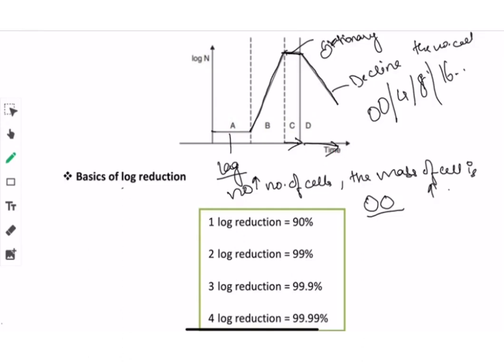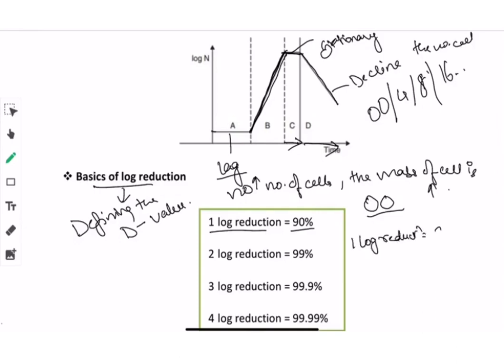For D value and thermal death kinetics, we use the log phase. Next, we move towards the basics of log reduction, which is necessary to understand as it will help in defining the D value. One log reduction is equal to 90 percent reduction of the initial population.